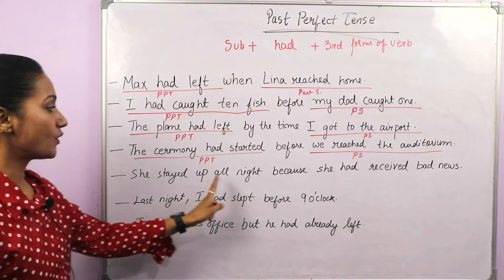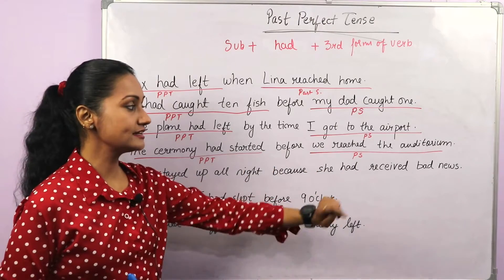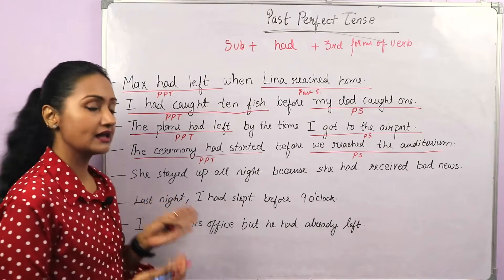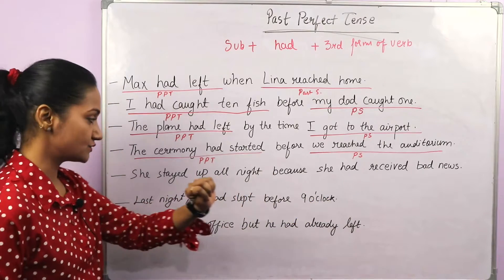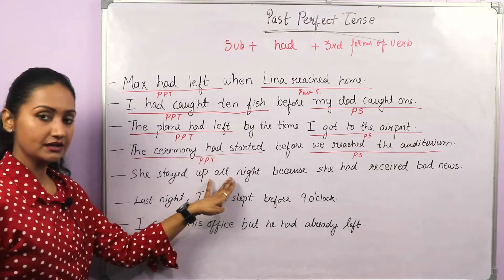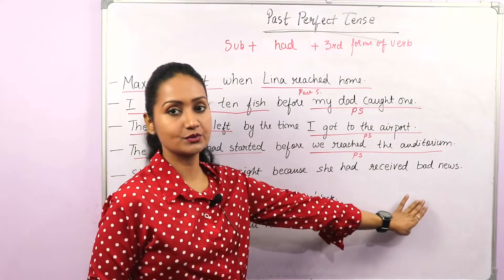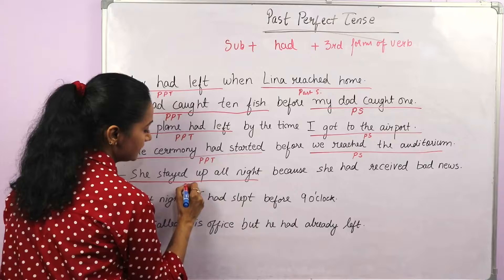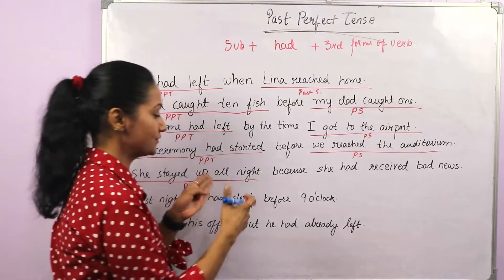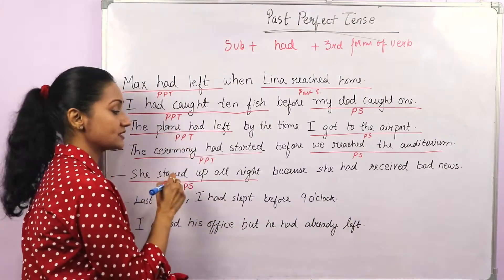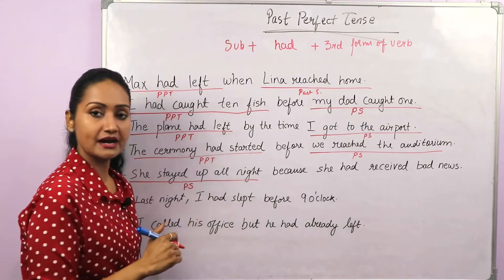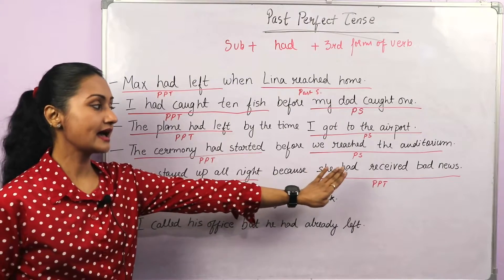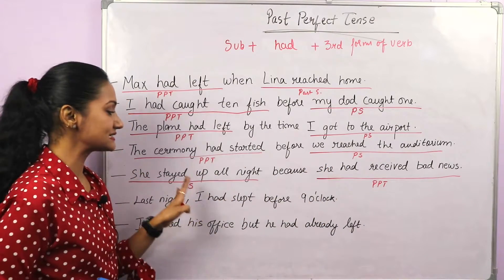Next: 'She stayed up all night because she had received bad news.' Why was she up all night? Because before that, she had received bad news. So 'she stayed up all night' is simple past — subject plus second form of the verb. And 'she had received bad news' is the earlier action — past perfect. This happened first, and because of this, she couldn't sleep all night.